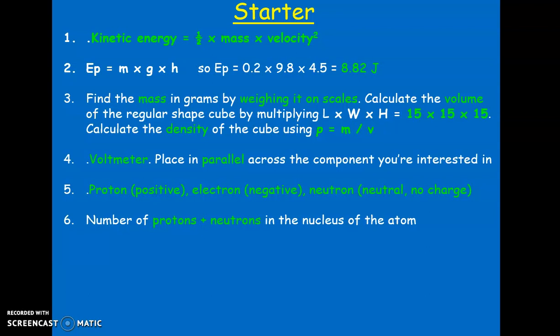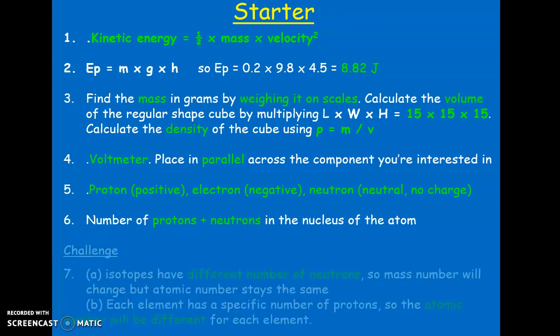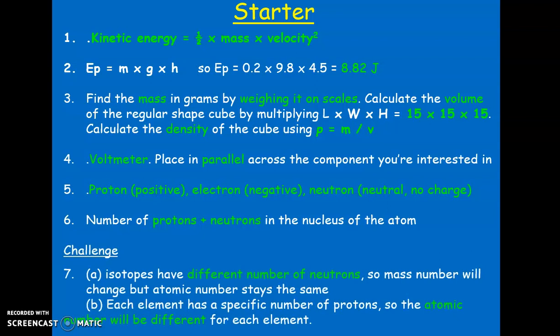The challenge question was: how would you be able to tell by looking at the mass number and atomic number if you have an isotope or a different element? Isotopes have different numbers of neutrons but the same numbers of protons. Because it's the same element, the atomic number stays the same but the mass number changes. Different elements have different numbers of protons, so they'll have different atomic numbers. Have a go through your answers, correct any that are not right, and we'll move on to our lesson.